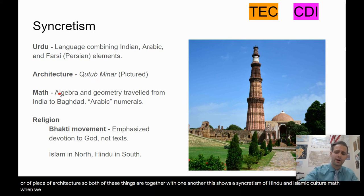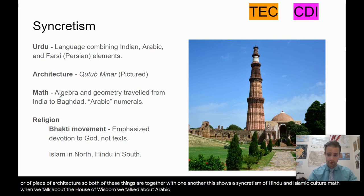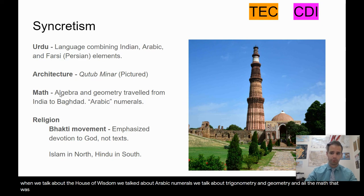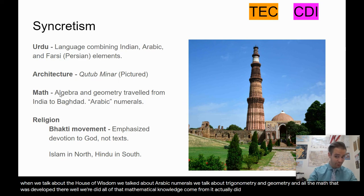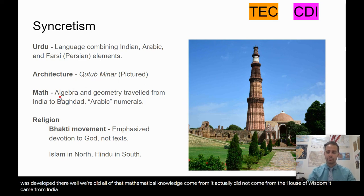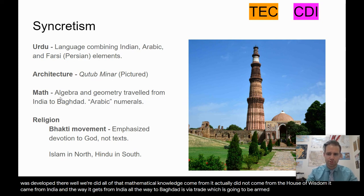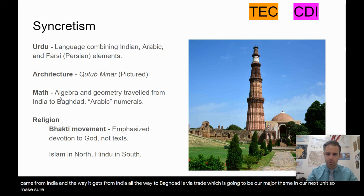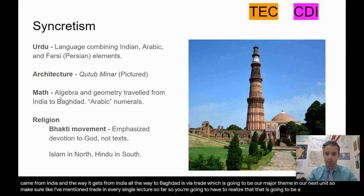When we talked about the House of Wisdom in the Abbasid Caliphate in Dar al-Islam, we talked about Arabic numerals, trigonometry, geometry, and all the math developed there. But where did that mathematical knowledge actually come from? It came from India. The way it gets from India all the way to Baghdad is via trade — which is going to be our major theme in our next unit. Make sure you realize that trade is going to be a key and important part of both this unit and the next.